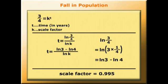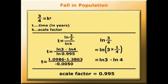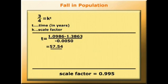Now in our case, log k is log 0.995. So substituting, t equals 1.0986 minus 1.3863 all over minus 0.0050. So if we solve for that, t equals 57.54.